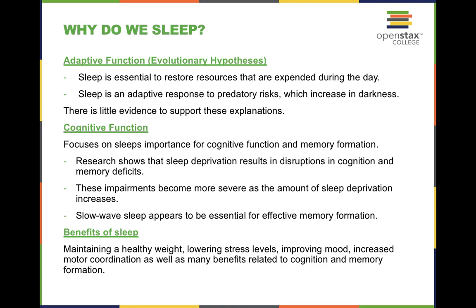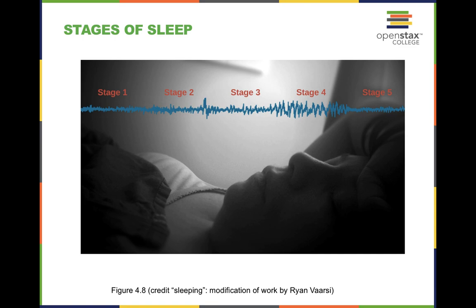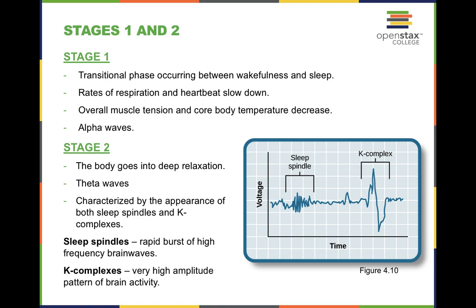There are five stages of sleep. We go through stages one through four, then stage five is REM sleep — rapid eye movement — where a lot of restoration happens and we experience dreams. Stages one and two are a transitional phase between wakefulness and sleep; individuals woken from these stages often feel like they weren't even asleep. The body enters deep relaxation, with muscle tension and core body temperature decreasing.